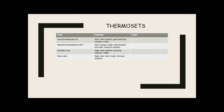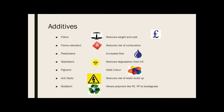Thermosetting plastics cannot be recycled because they set permanently. Urea formaldehyde is hard, has good heat resistance and electrical insulation, but is quite brittle. Melamine formaldehyde is hard, opaque, tough, food safe, and chemically resistant — commonly used in kitchen counters. Polyester resin has good heat and chemical resistance but is brittle. Epoxy resin is clear, hard, tough, and chemically resistant — seen in river table projects, though these are harmful to the environment.